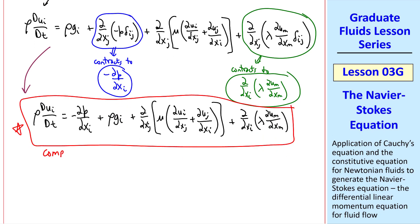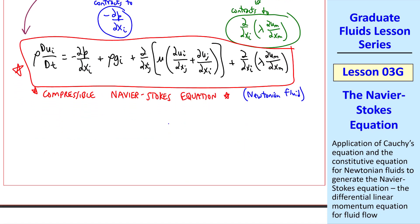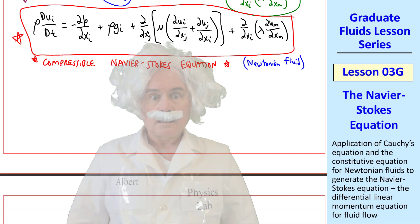This equation is the compressible Navier-Stokes equation, which is valid for any Newtonian fluid. Once we had our constitutive equation, derivation of the Navier-Stokes equation was fairly straightforward.